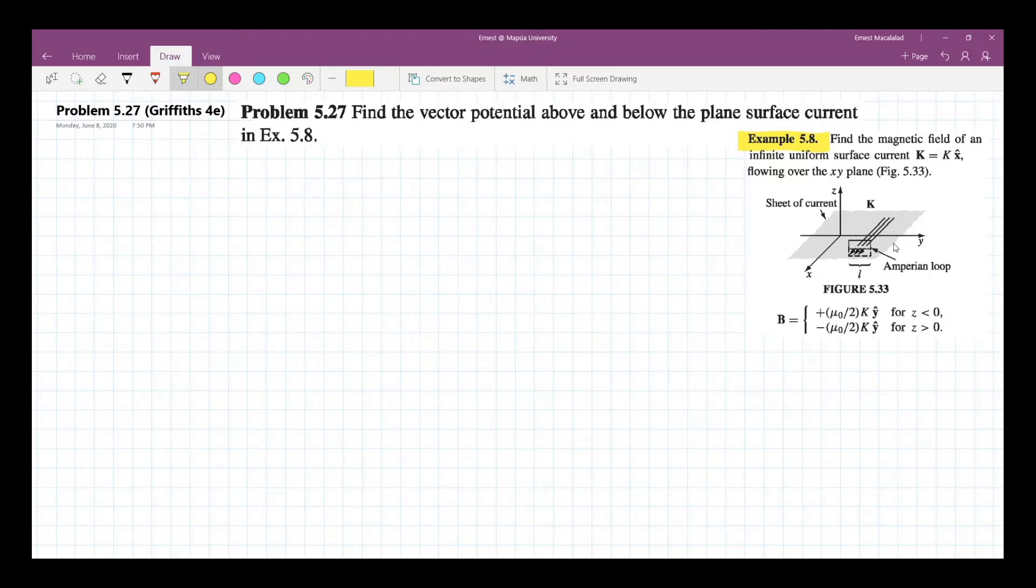So in this case, this is your sheet of current as in this figure. And the resulting magnetic field is given by plus or minus mu naught k over 2 y hat. It's plus for the region below the xy plane when z is negative.